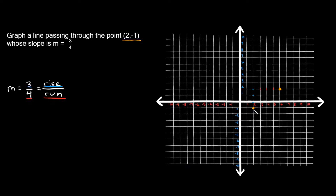Just to recap: all you have to do is start from the point we were given, (2, -1). Our slope was 3 over 4, so the rise is 3 and the run is 4. That's how we landed at this second point. Now that we have two points, that's all we need to graph a straight line.